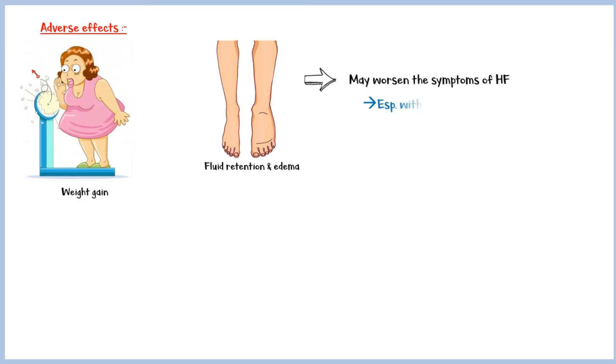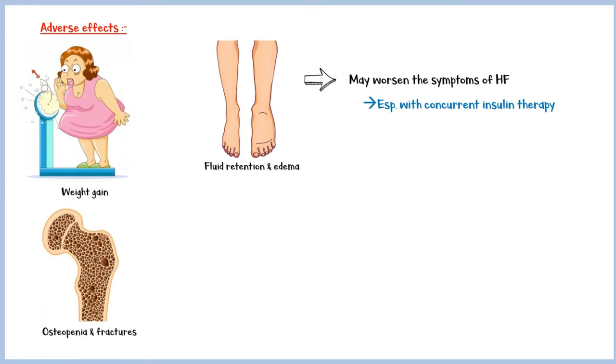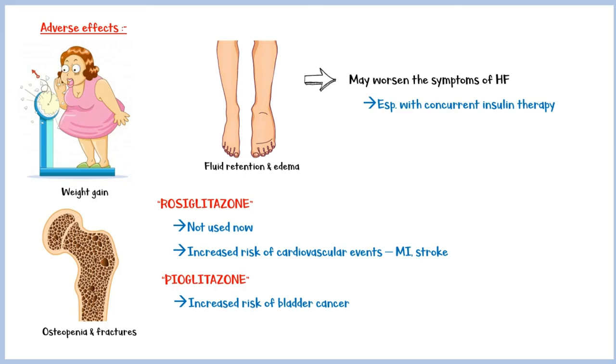Most common side effect of glitazones is weight gain. They also cause fluid retention and edema, which may worsen the symptoms of heart failure, especially with concurrent insulin therapy. In addition, glitazones cause osteopenia and fractures in bones. The drug rosiglitazone is not used now because it is associated with an increased risk of cardiovascular events such as myocardial infarction and stroke. Pioglitazone is also associated with an increased risk of bladder cancer. Moreover, these medications may increase the risk of hepatitis and liver failure. Therefore, liver enzymes should be monitored closely.